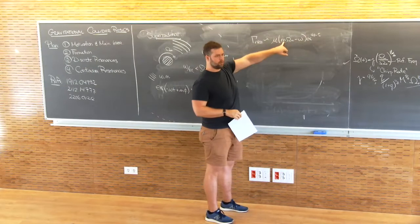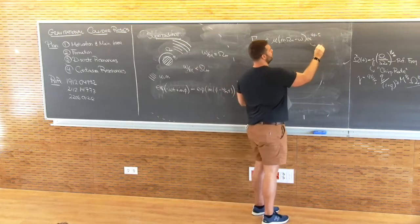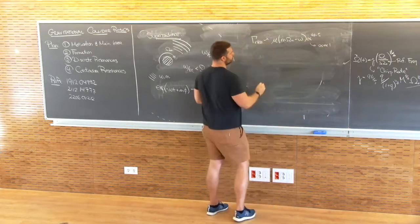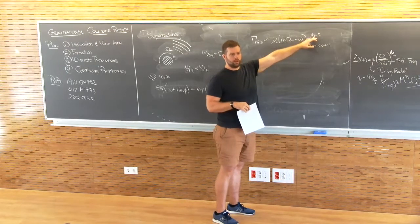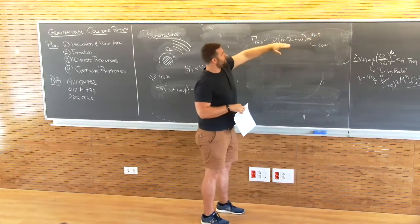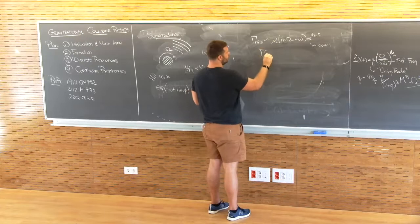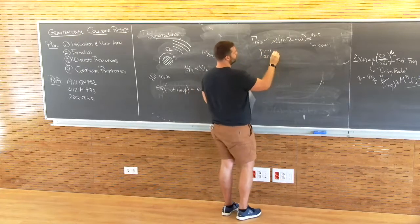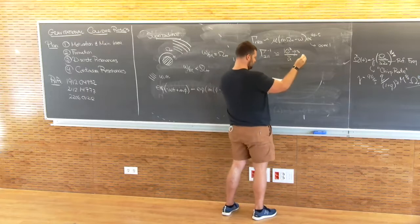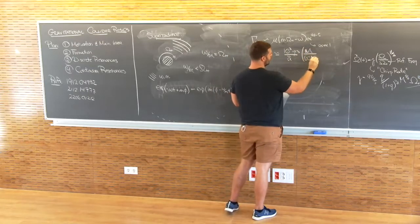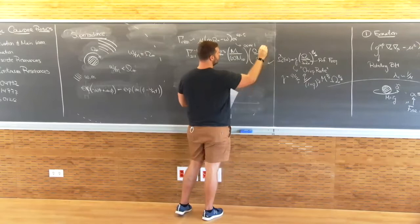The growth rate knows about the total angular momentum, specifically the azimuthal angular momentum and the orbital angular momentum. Since this is very small, the state which grows the fastest is going to be the one with minimal total orbital angular momentum — and that's going to be the 2-1-1 state, the 2p state of the hydrogen atom, which for favorable parameters can grow in about a thousand years.